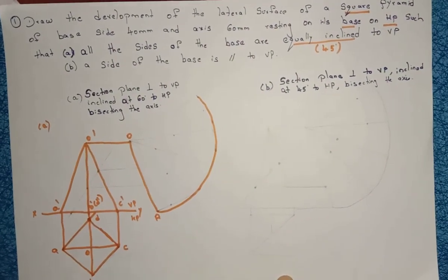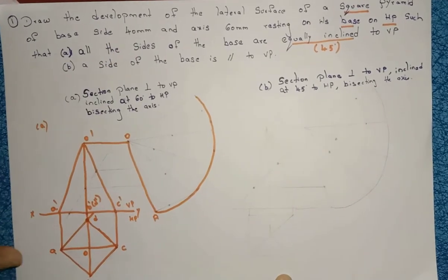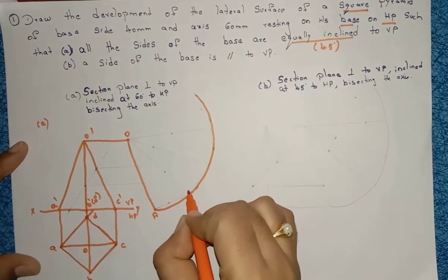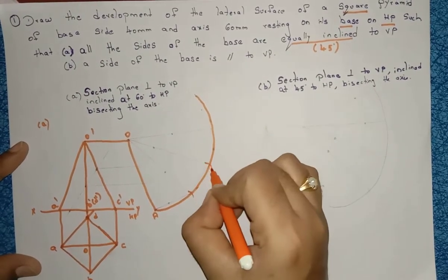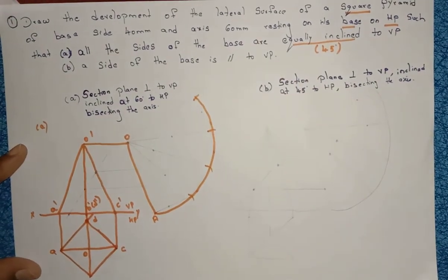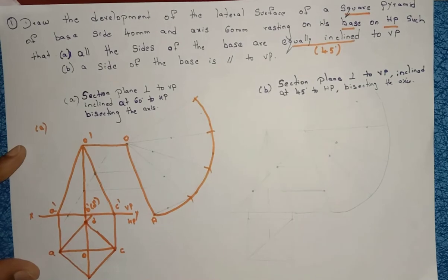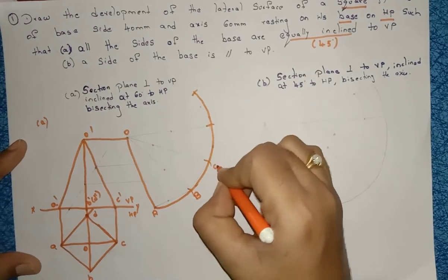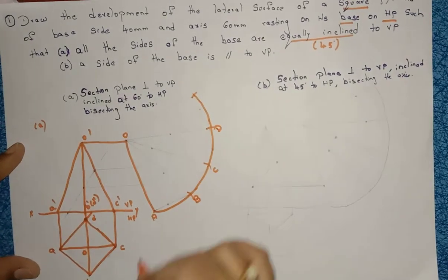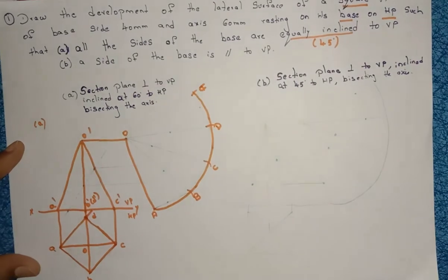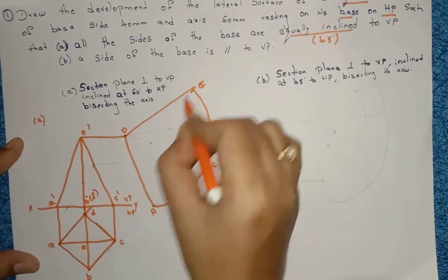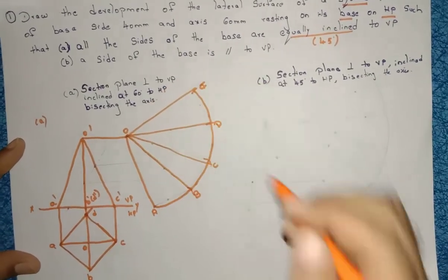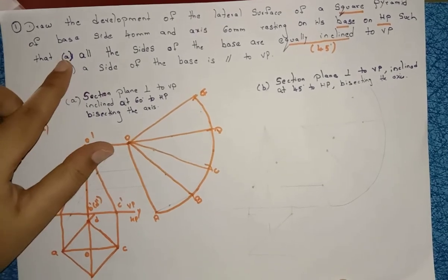The number of sides for a square is 4 and the side is 40 mm. Take 40 mm with your compass, keep it on the arc, and draw four arcs — 1, 2, 3, 4. Name them B, C, D, and the ending point is again A (starting and ending point should be same). Join O to A, O to D, O to C, and O to B. This completes the development for part A.